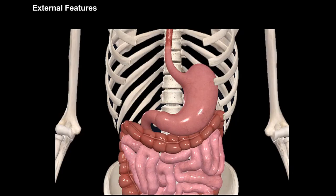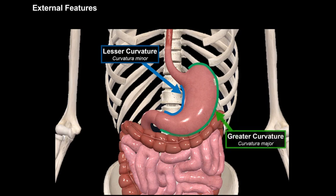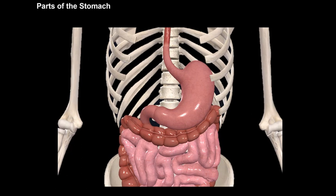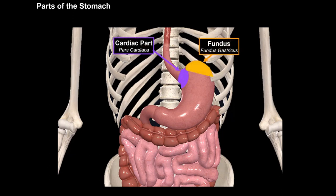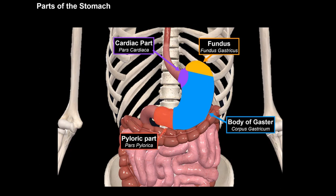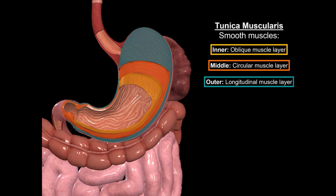The stomach has two curvatures: the lesser curvature, which forms the concave part and is continuous with the right border of the esophagus — with the angular incisure marking the connection between the body and pylorus — and the greater curvature, which forms the convex part. The stomach is subdivided into five parts: the cardia, fundus, body, and pylorus. The pylorus contains the pyloric sphincter and pyloric orifice regulating discharge into the small intestine. The stomach has three smooth muscle layers: outer longitudinal, middle circular, and inner oblique.